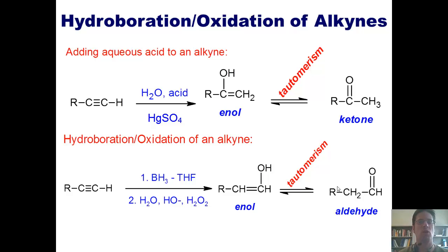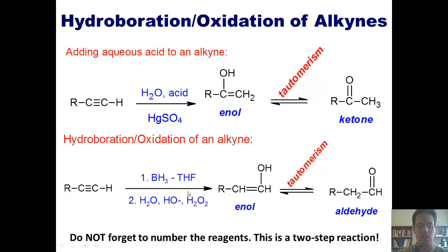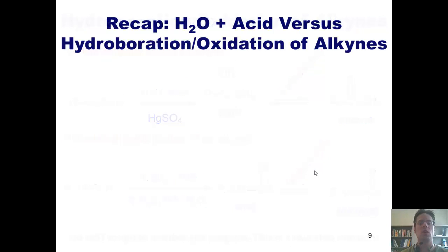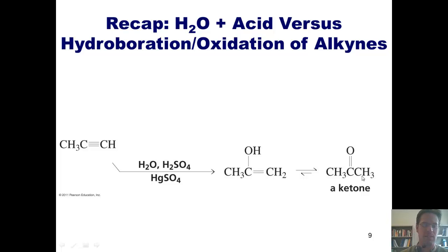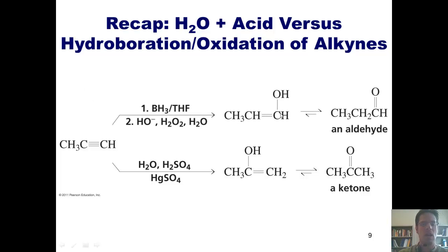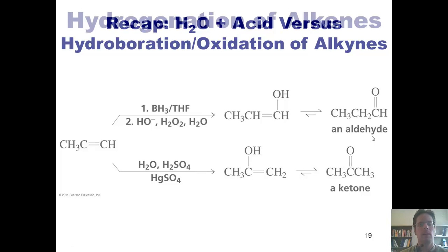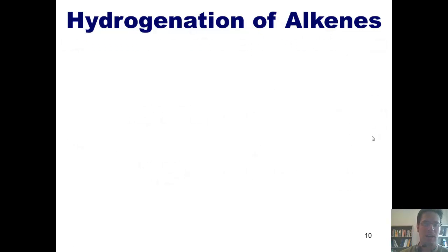To recap: if I take an alkyne and treat it with water, acid, and mercury sulfate, I generate an enol with the hydroxyl group on the internal carbon, which instantly tautomerizes to form a ketone. In contrast, if I treat the same alkyne under hydroboration oxidation conditions, the OH ends up on the external carbon, which also instantly tautomerizes to form an aldehyde. Remember to number the reagents — this is a two-step reaction.